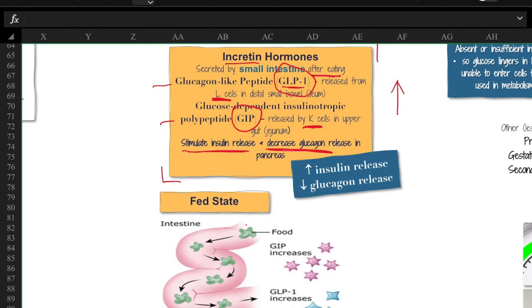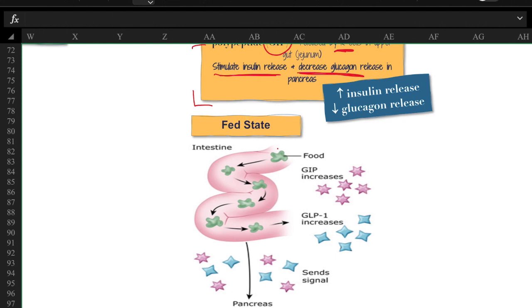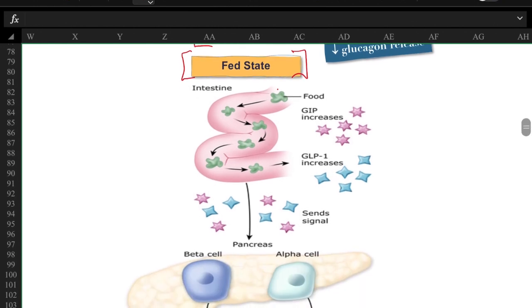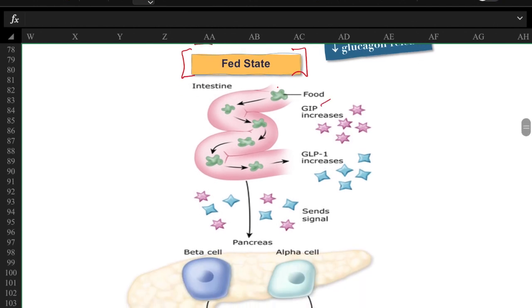That's because we've eaten, we have an increase of glucose in our blood, we do not need any more glucagon, we need more insulin. So how do these work? Once we eat, we're in a fed state, nice and full. The intestine is going to release GIP and GLP-1.